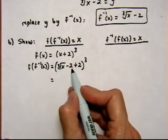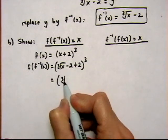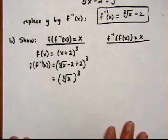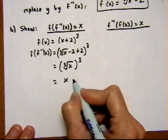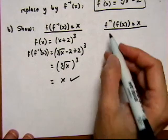We should get just an x out. And let's see what happens. We have minus 2 plus 2 are gone. So we're left with cube root of x. And that's being cubed. And the cube root being cubed will give us just the insides out, which is x. So that one worked. And now we'll check out the other one.